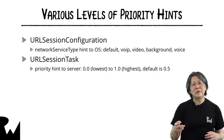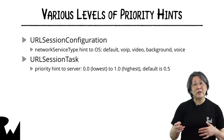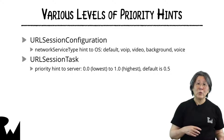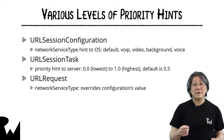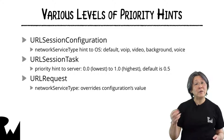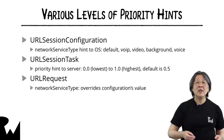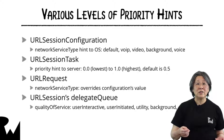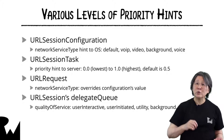Low priority is greater than zero but less than default priority. High priority is greater than default priority and less than one. A URL request can override its session's configuration network service type. For example, the session configuration might be video, but a request might be prefetching, so it sets its network service type to background. In a later video, we'll see that a session's delegate queue is an operation queue, so you can specify a quality of service value to indicate its importance to the user.